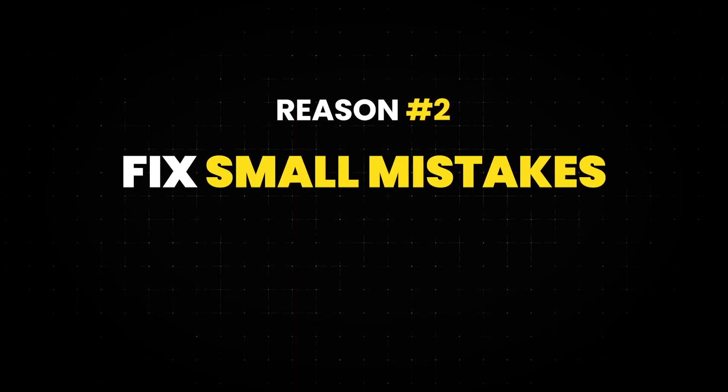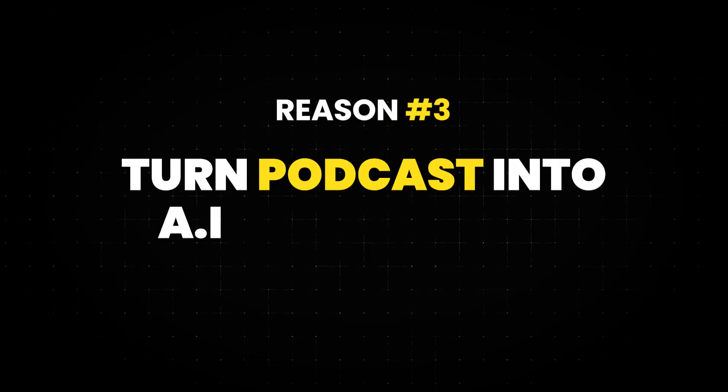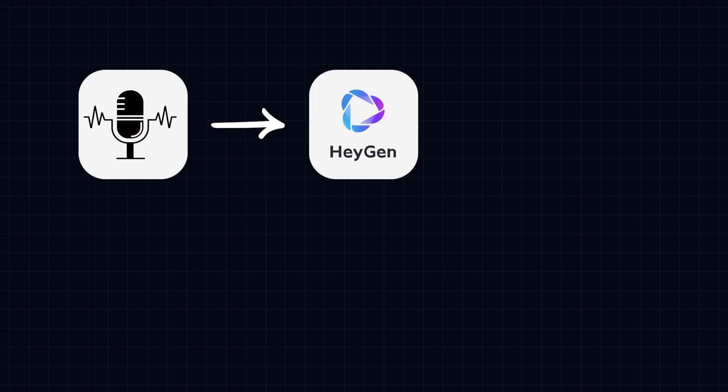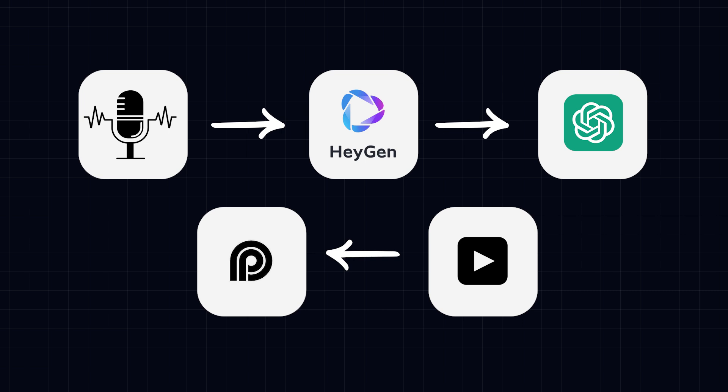The second reason why this can be really great is because you can fix small mistakes with AI. For example, if you made an error in the intro — which happens honestly too many times — or you have made a mistake in an interview, you can now just fix it with this new AI feature. The third reason is that you can turn any type of podcast that you've either been on or your own podcast into an AI avatar. Then you can write a script with ChatGPT, generate the entire video, and then run it through OpusClip where you can have AI generated shorts of yourself. This way you can increase your output to the max.